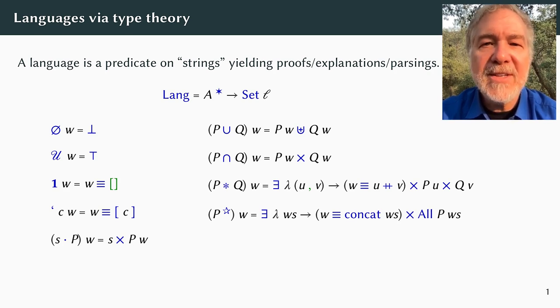As a more interesting example, a string W is in the concatenation of languages P and Q exactly when there are strings in P and Q that concatenate to W. While precise and elegant, this definition does not tell us how to recognize or parse language concatenations, since the existential quantification is over infinitely many string pairs.